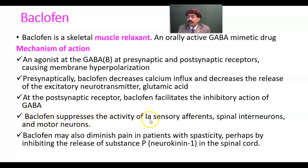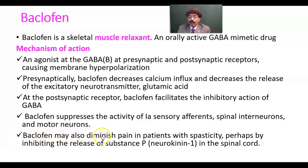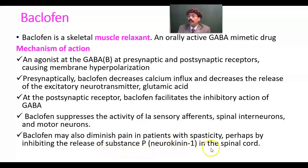Baclofen suppresses the activity of 1A sensory efferents, spinal interneurons, and motor neurons. Baclofen may also diminish pain in patients with spasticity, perhaps by inhibiting the release of substance P — that is called neurokinin-1 — in the spinal cord.